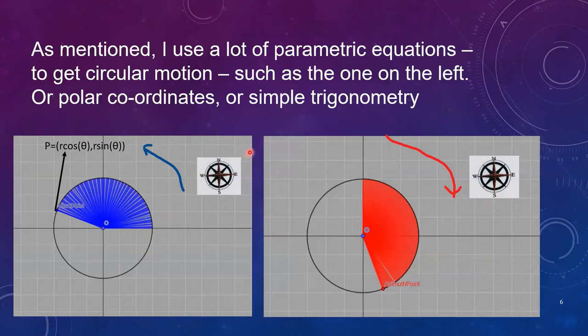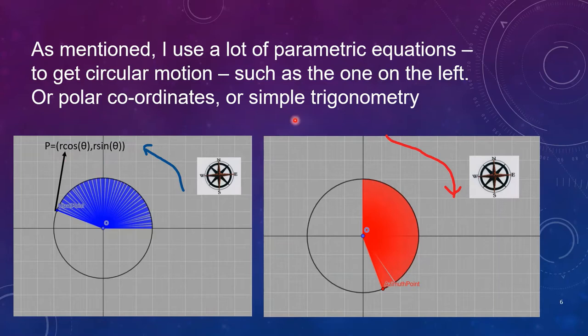So as I mentioned I use lots of parametric equations to get circular motion and I'll use equations like this on the left where I say p equals to r cosine of theta, r sine theta and then as theta goes from 0 to 2π it will generate a circle, a point going around a circle. For those not familiar with parametric equations you'll of course recognize this as being polar coordinates or for that matter you could use simple trigonometry to work out the coordinates of any one of the points.